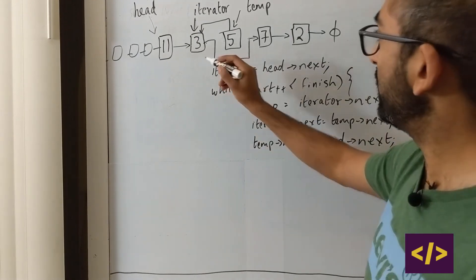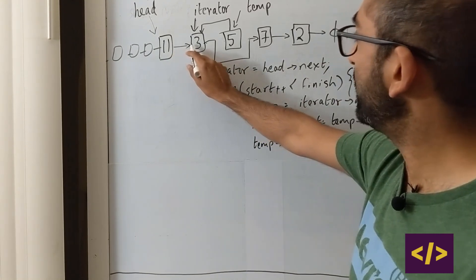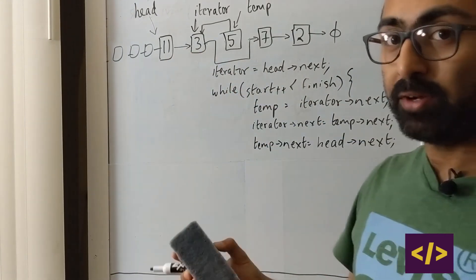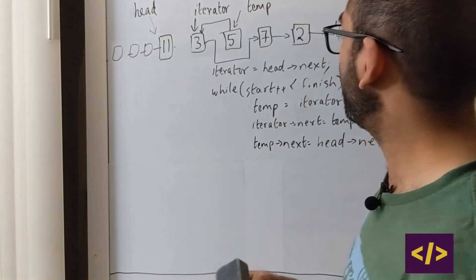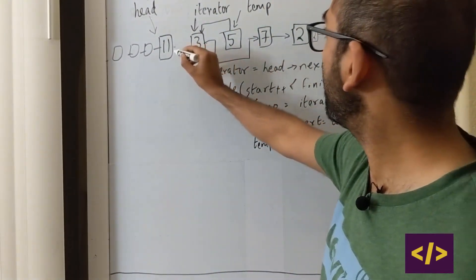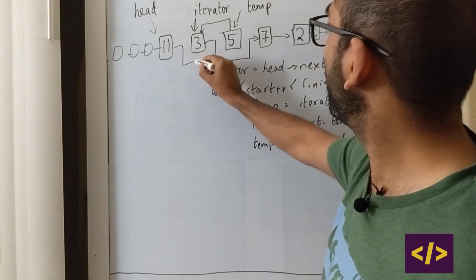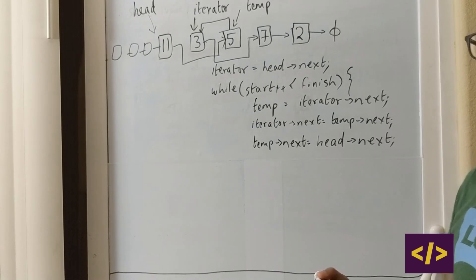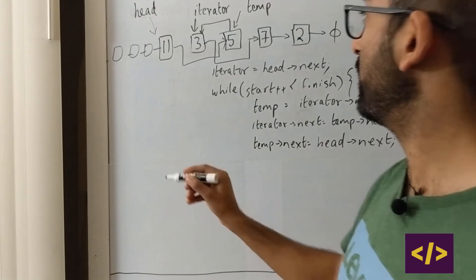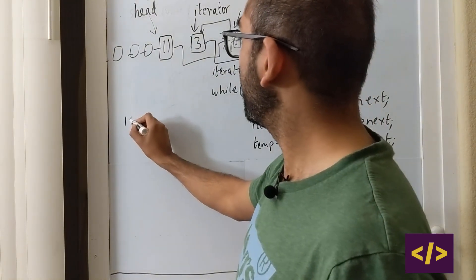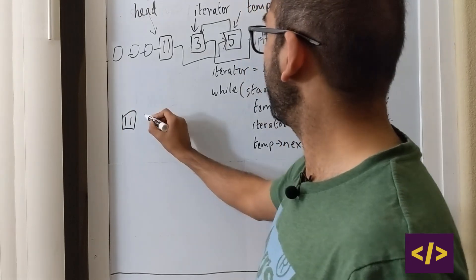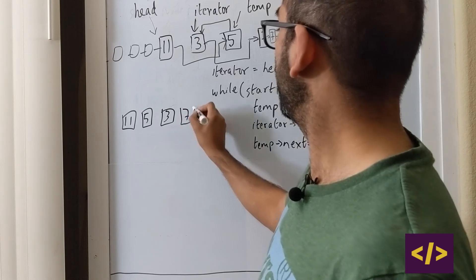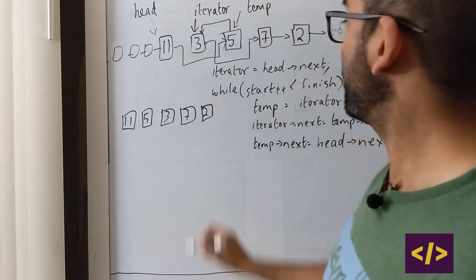And then finally what do we do? We need to break this chain that is pointing 1 to 3. Where do we want that to point to? We want it to point to 5. Now after the first iteration, what is our current linked list? It looks like 1, 5, 3, 7, 2.